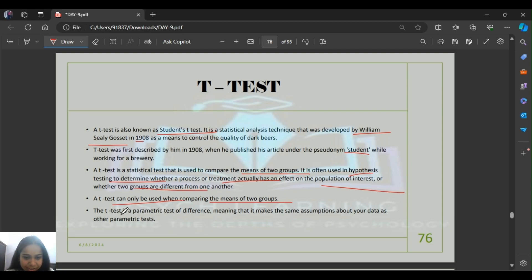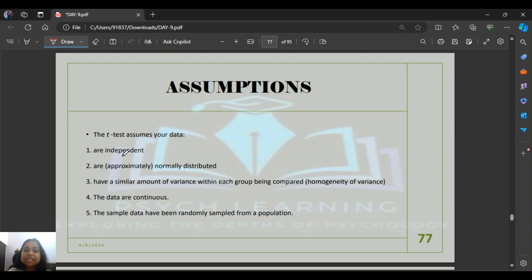If you need to compare more than two groups, you use ANOVA, which we'll cover in future classes. T-test is a parametric test of difference where we look at means. Let's understand the assumptions in detail.